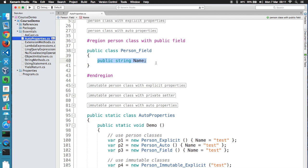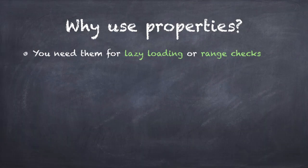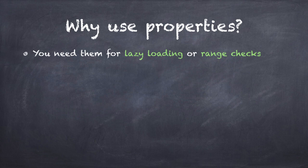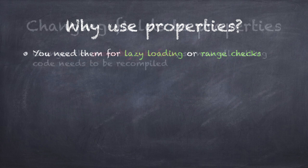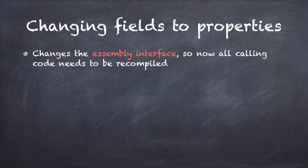Well, there are important reasons to use properties over public fields. Let's say you start by introducing a public field in your class. Then, a couple of weeks later, you discover that you need to lazy load this field. So now you have to refactor the field into a property and put the lazy loading code in the getter. But now you've introduced a breaking change. The interface of your assembly has changed, because what was once a field is now a property. Any code that calls your library will need to be recompiled.